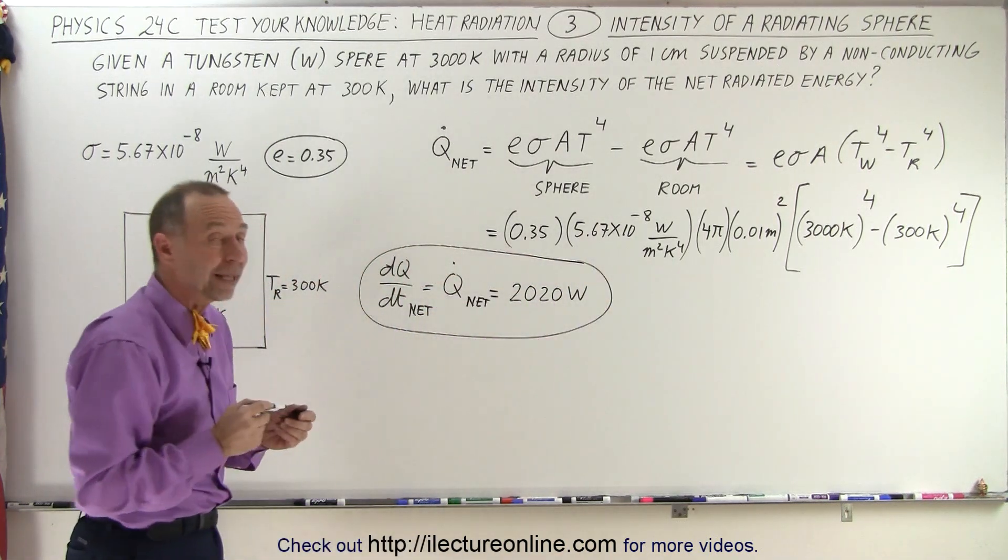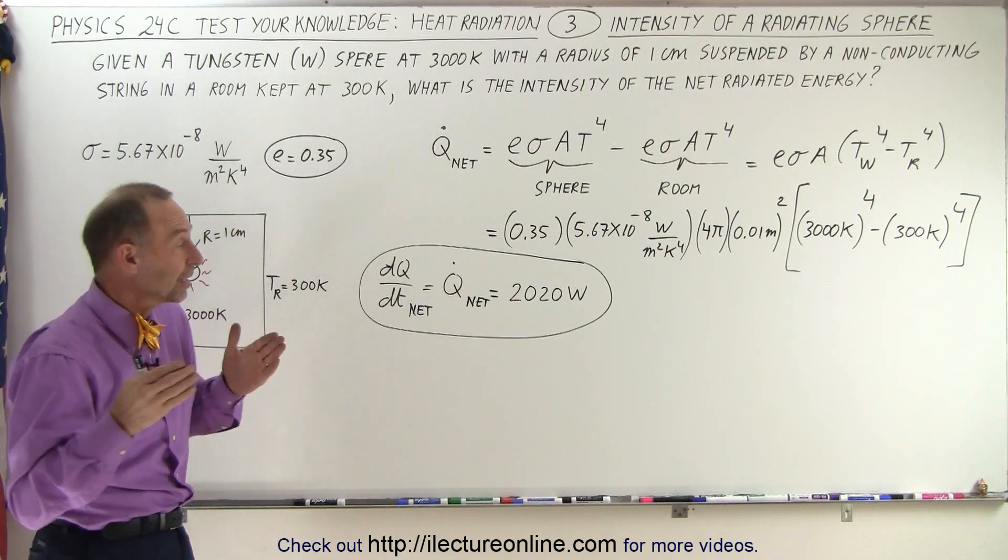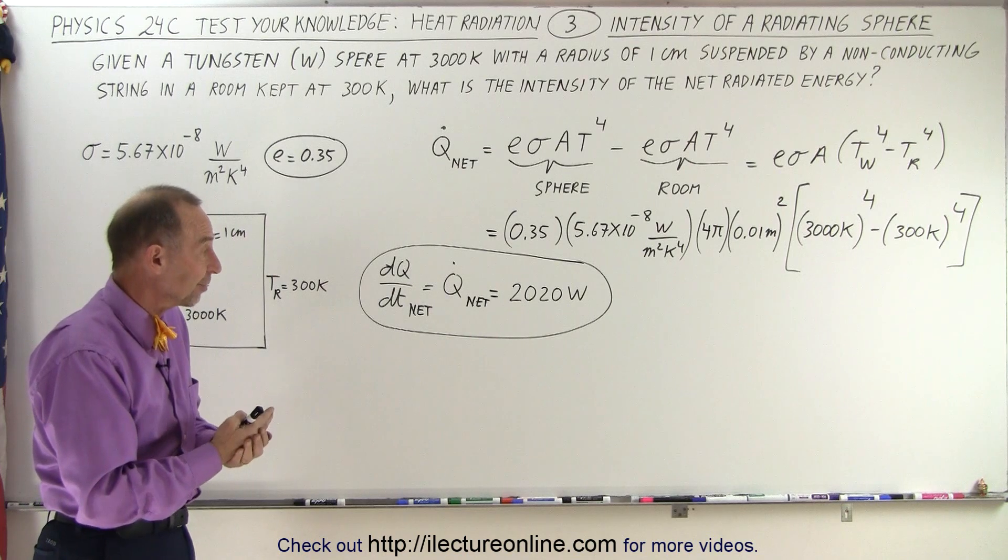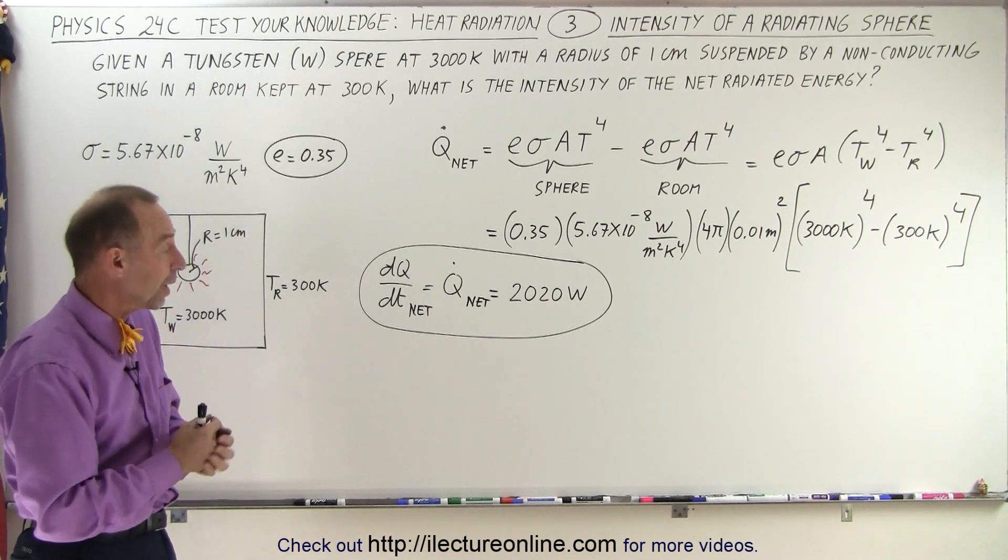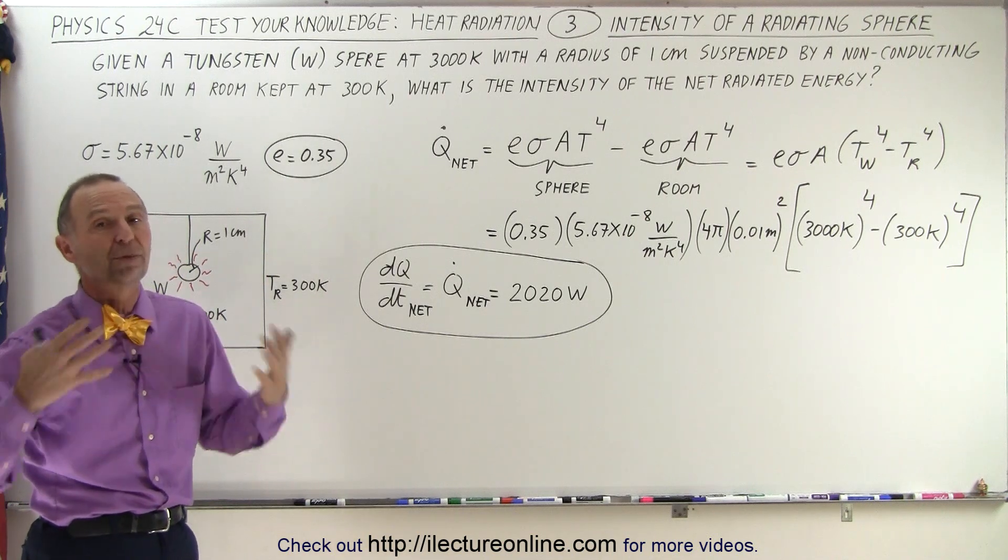So, notice, that's quite a bit. That is much greater, significantly greater, than the amount of heat you can get out of an electric space heater that's rated at a maximum of 1,500 watts. So, a small little sphere at 3,000 Kelvin will radiate an enormous amount of energy.